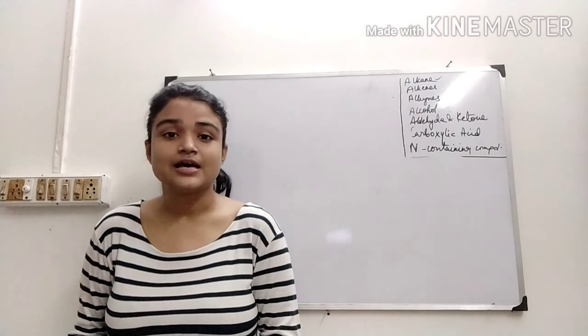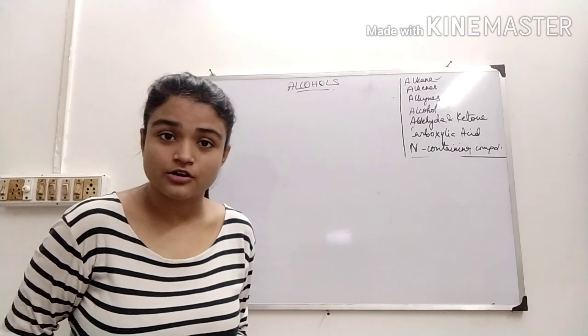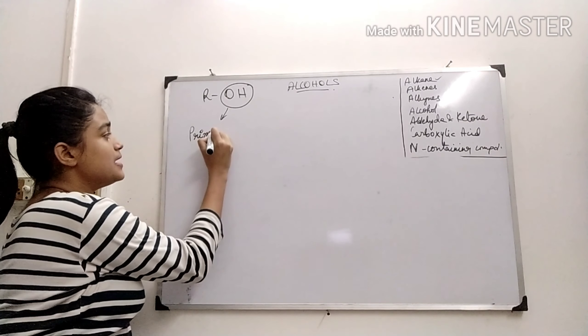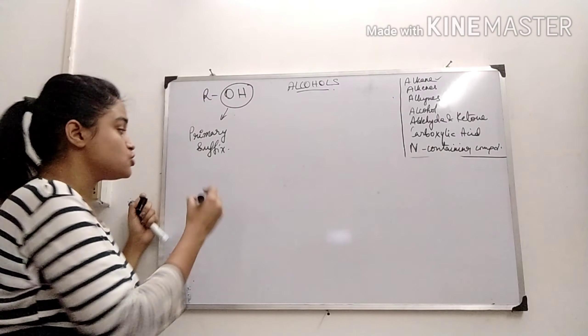So first, we are going to do alcohols. This is the first video where a functional group is involved. In the alkyl halides, that is not a functional group — that is a prefix. Alcohol here is the functional group where OH is present, and in compounds it acts as the primary suffix. It acts as secondary suffix, but in case of certain compounds where another functional group is present and that functional group is prior in the priority order list, then alcohol acts as the primary prefix where its name changes to hydroxy.